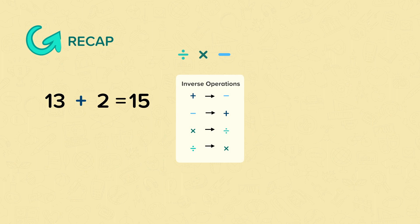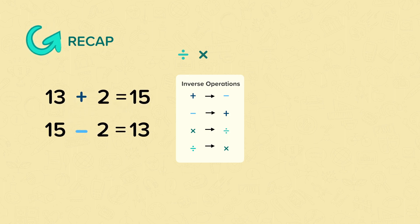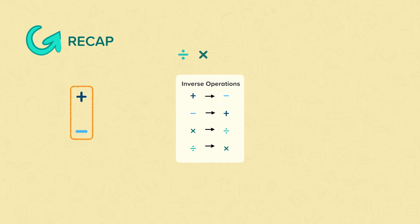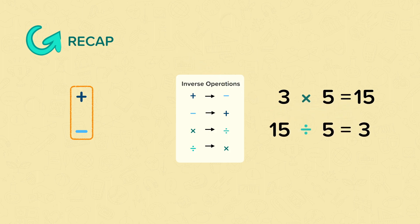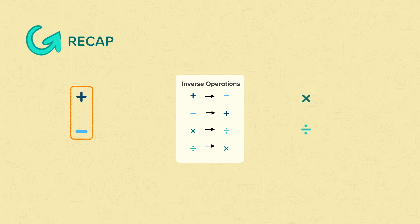Recap. 13 plus 2 equals 15. We can use the inverse operation to say 15 take away 2 equals 13. Adding and taking away are inverse operations. 3 times 5 equals 15. We can use the inverse operation to say 15 divided by 5 equals 3. Multiplying and dividing are inverse operations.